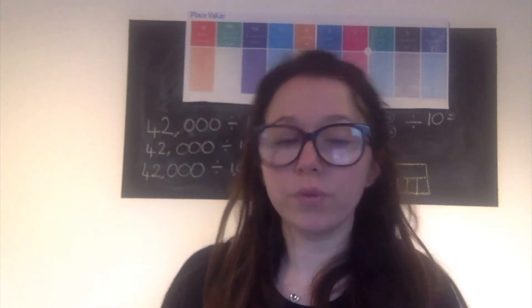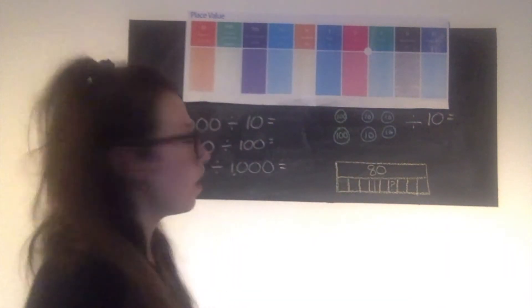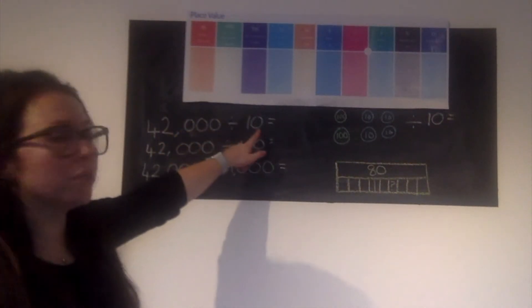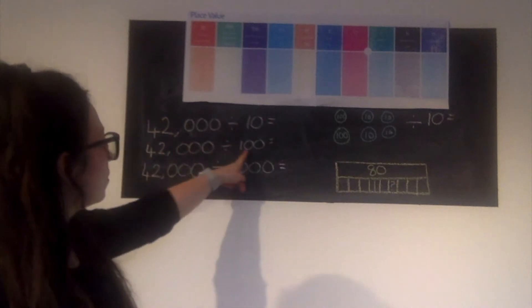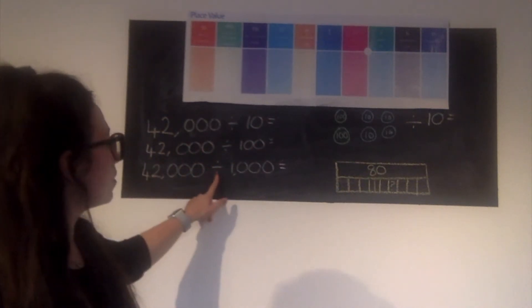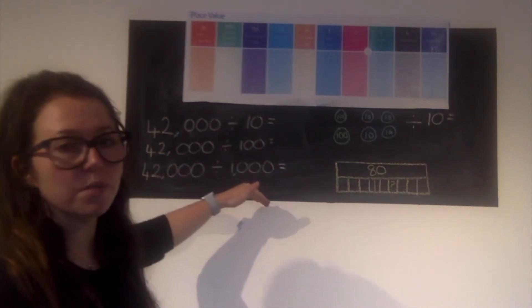Today we're going to be dividing by 10, 100, and 1000. So what I'd like you to do in a moment is pause the video and have a go at these few starter questions to begin with. If you're struggling, don't worry, we'll go through them together, but I'd like you to have a go first. So the questions are: 42,000 divided by 10, 42,000 divided by 100, 42,000 divided by 1000 - hopefully you see a pattern.